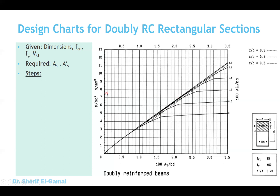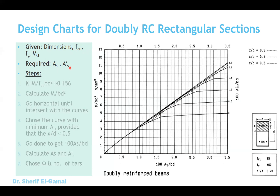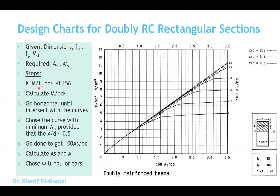Usually the dimensions will be given or assumed from experience, along with FCU, FY yield, and M ultimate. What is required is the area of tension steel and compression steel. The first step is to calculate K as usual — at the beginning you don't know if the section will be singly or doubly reinforced. In this case K will be greater than 0.156, meaning we go to the doubly reinforced rectangular section procedure.